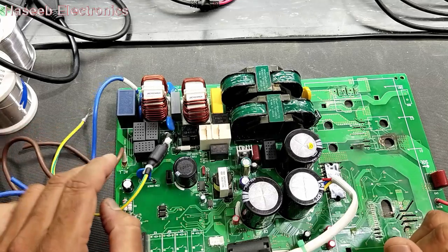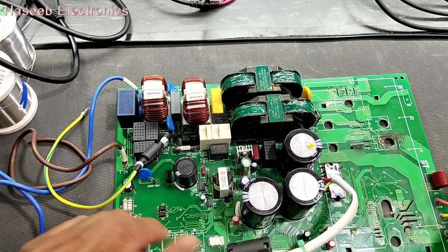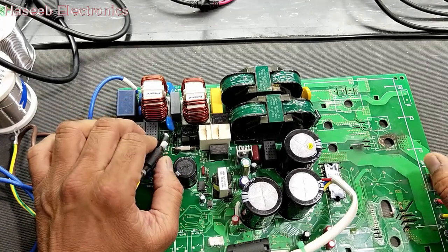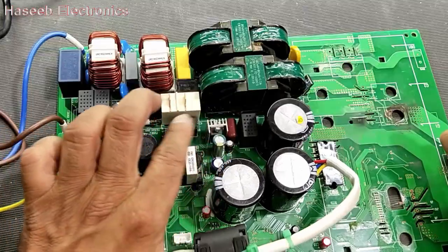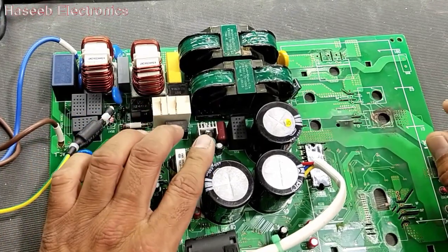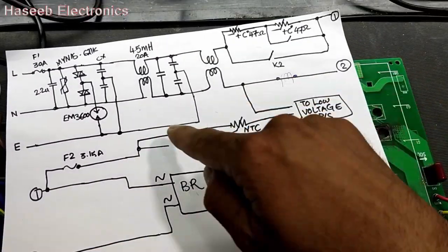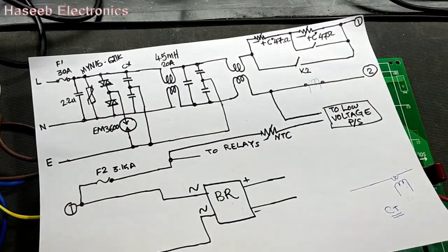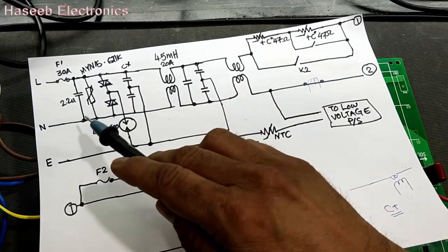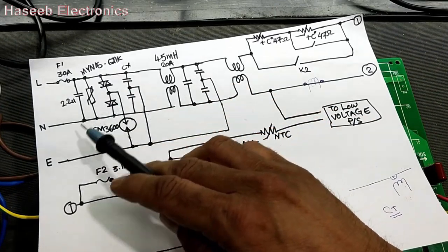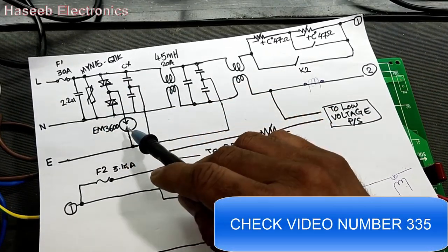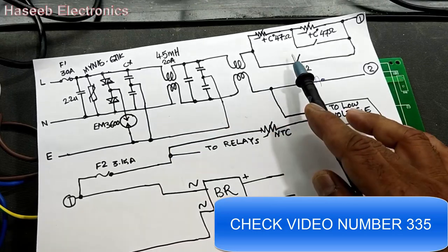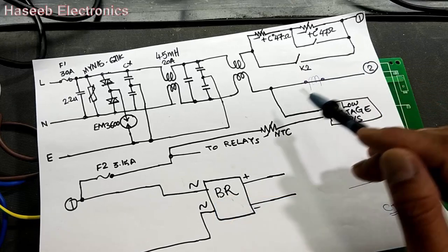Assalamualaikum warahmatullahi wabarakatuh friends, this is our third video in inverter AC board. In this video we will discuss low voltage power supply. In the first video we discussed filter and protection circuit for high frequency, high voltage, common mode and differential mode noises, high voltage arrester, first stage filter, second stage filter, and current surge protection.